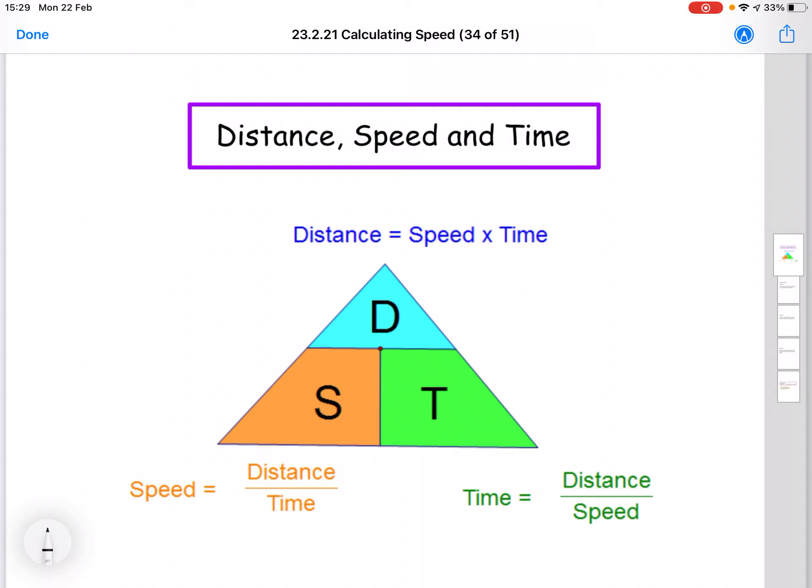So here we have the formula for speed. Remember I talked about this yesterday. Speed is distance divided by time. You take the distance that's covered, divide it by the time that it takes to cover that distance and you'll get the speed. So that formula down the bottom is the formula that we're going to be using in this lesson today.